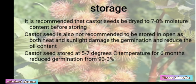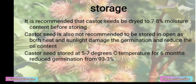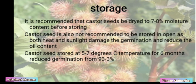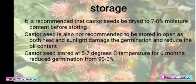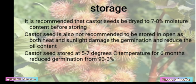Storage: It is recommended that castor seeds be dried to 7-8% moisture content before storing. Castor seed is not recommended to be stored in the open, as both heat and sunlight damage germination and reduce oil content. Castor seed stored at 5-7 degrees Celsius for 6 months reduces germination from 93% to 3%.